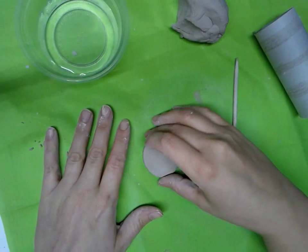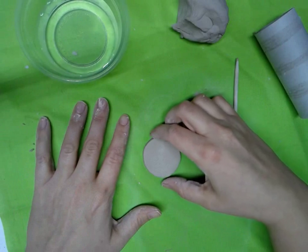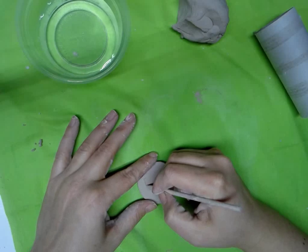Alright, so now you have your pendant shape and you're going to make it into a pendant. The first thing you're going to do is turn it over and write your name on the back. Just write it gently.